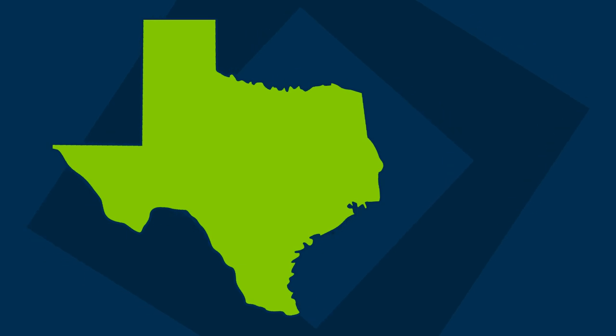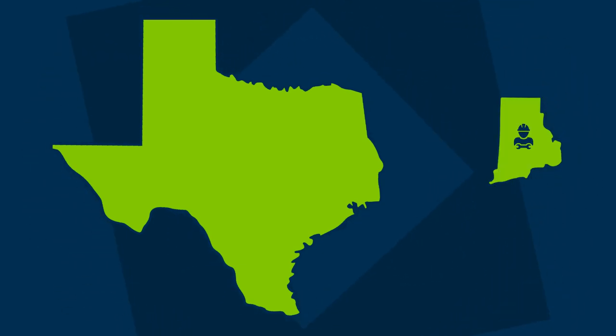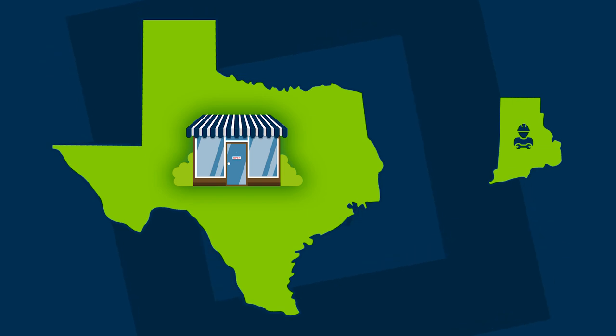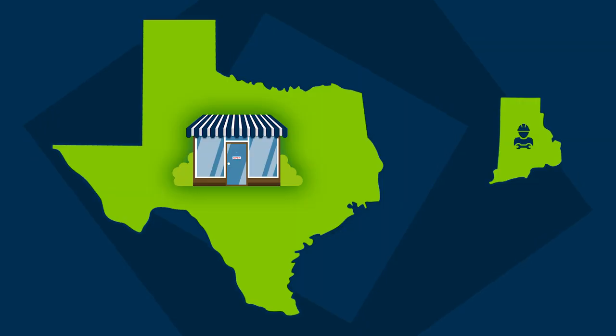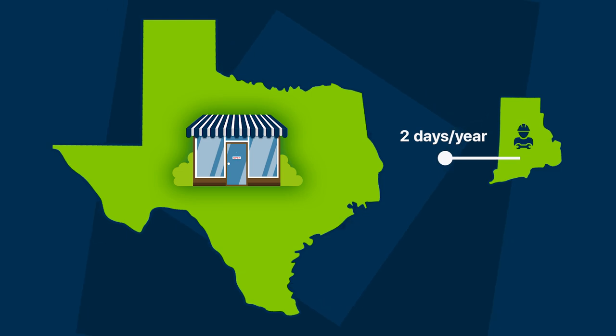Now let's say you have a contractor — not an employee, because there's a big difference — in Rhode Island. Even though your business is located in Texas, you now have physical nexus in Rhode Island. What if the contractor in Rhode Island worked for you just one week of the year? If she worked for you at least two days in the year, you have physical nexus in the state of Rhode Island for that entire year.